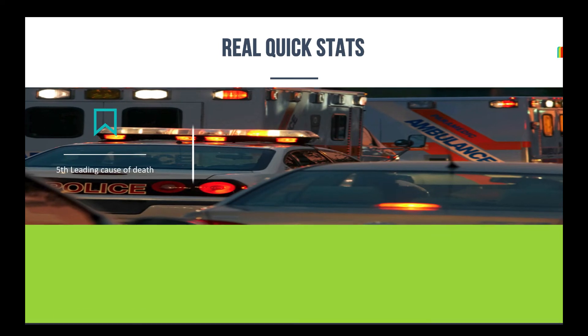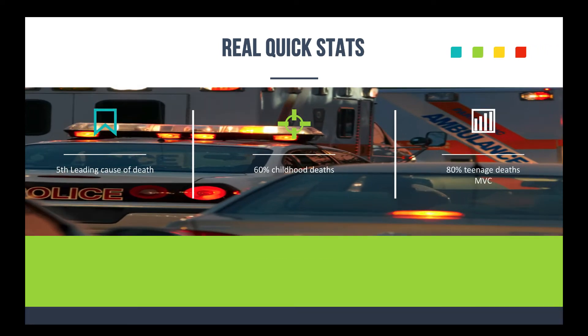So just some quick stats. Trauma is the fifth leading cause of death nationwide. 60% of it is childhood deaths, like things from MVAs and chokings and things like that. And 80% of deaths account for teenage deaths, especially motor vehicle collisions.